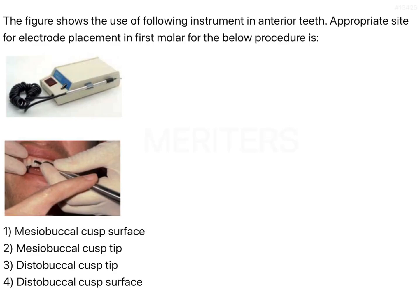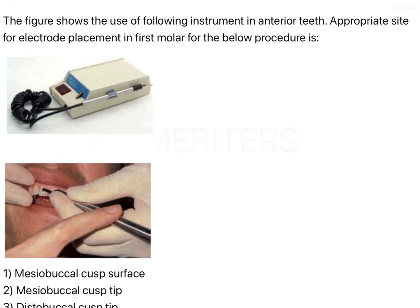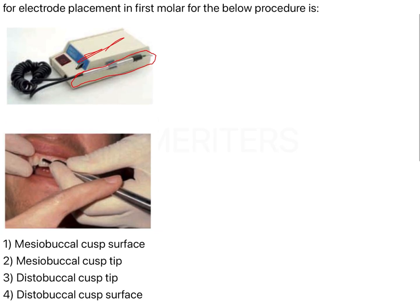The question shows the use of an instrument in anterior teeth with an appropriate site for electrode placement. Looking at the enlarged image, there is a machine with a pen-like extension that is placed on the middle surface of the incisor.